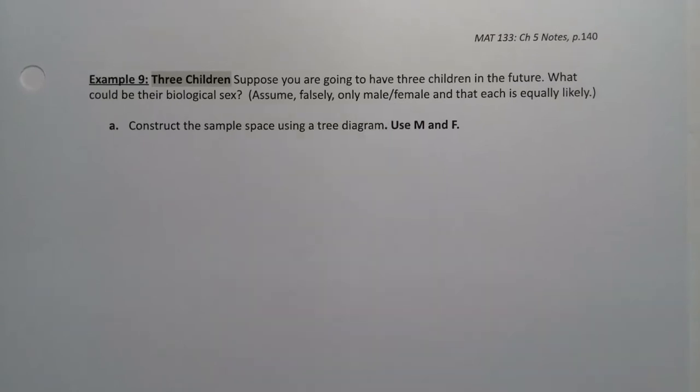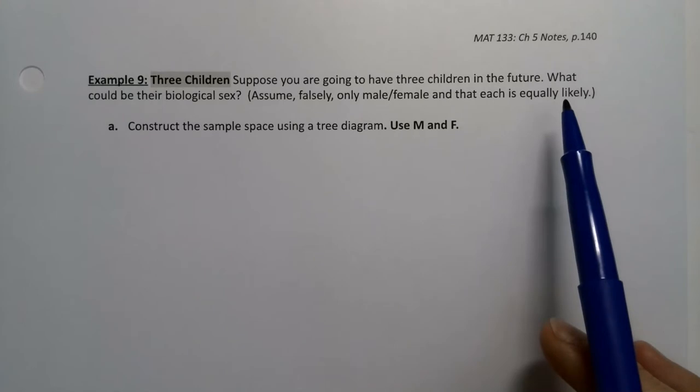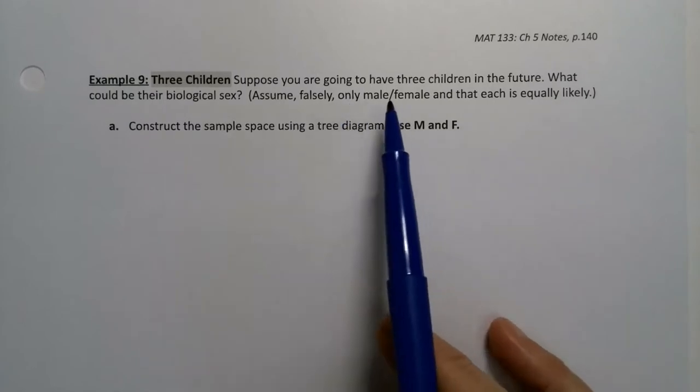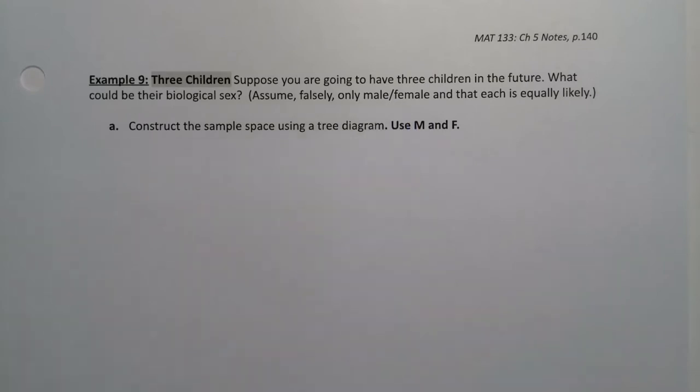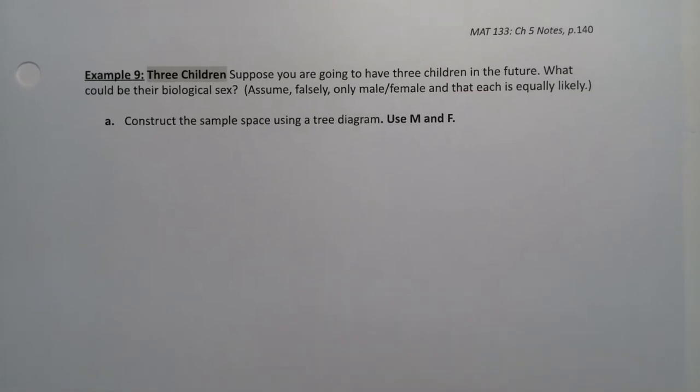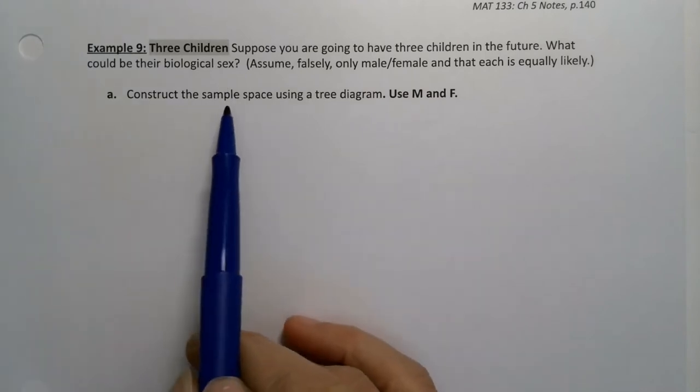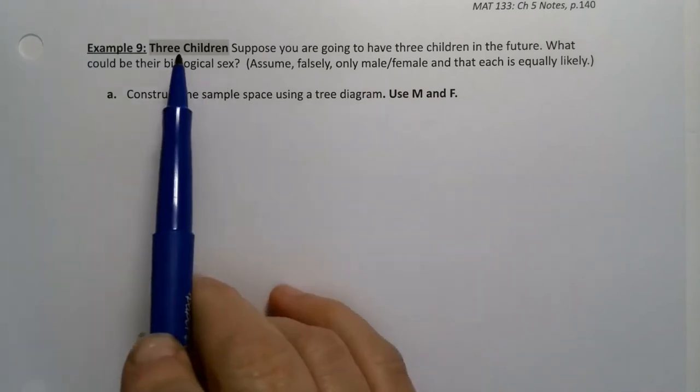But there are many babies that are born intersex. And so we're just going to not deal with that. Not because it's not important and valuable, but it just makes our life more difficult for the sake of a tree diagram. And we're also assuming equally likely, which is also false. It's not 50-50. First of all, there's a whole other category. And second of all, it's not evenly split. It's actually a little bit higher from the male side, as a matter of fact. Alright. Now, taking all these false assumptions into place, which is a pretty common way for us, because it just makes things a lot easier, probabilistically speaking.